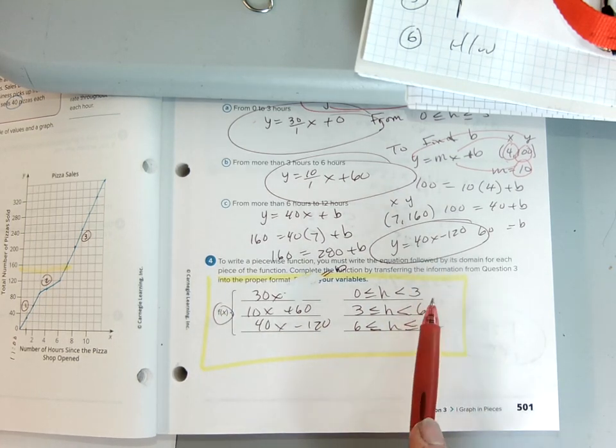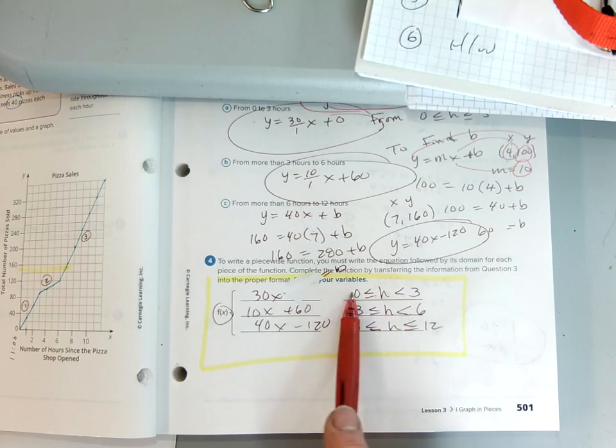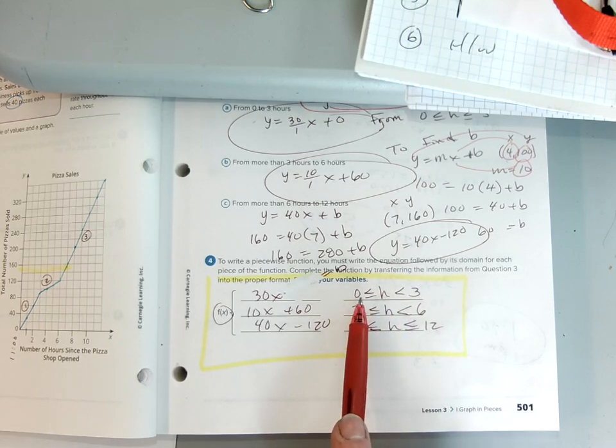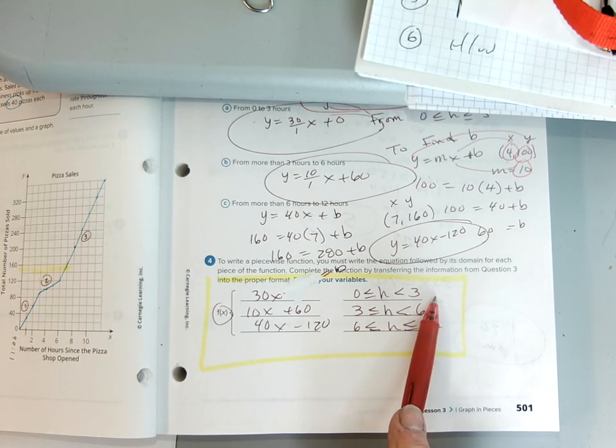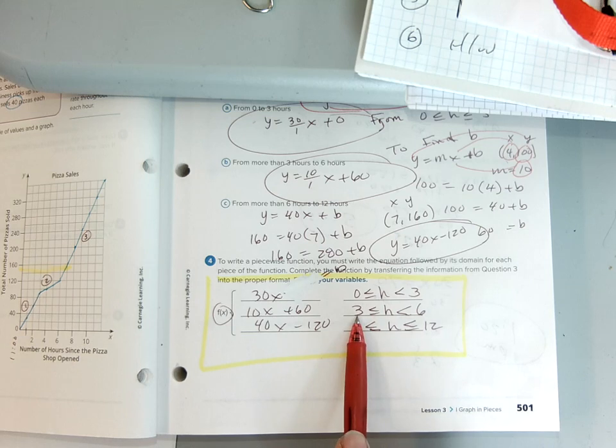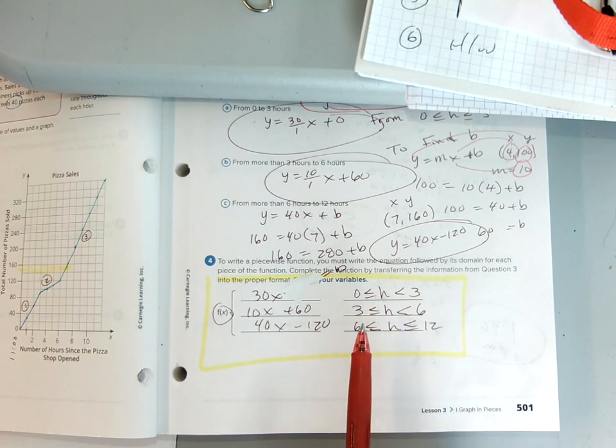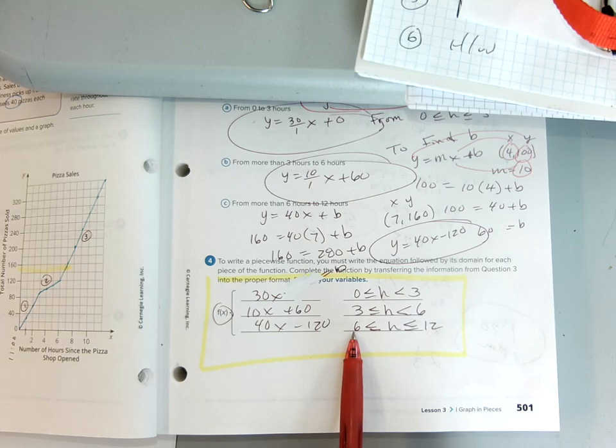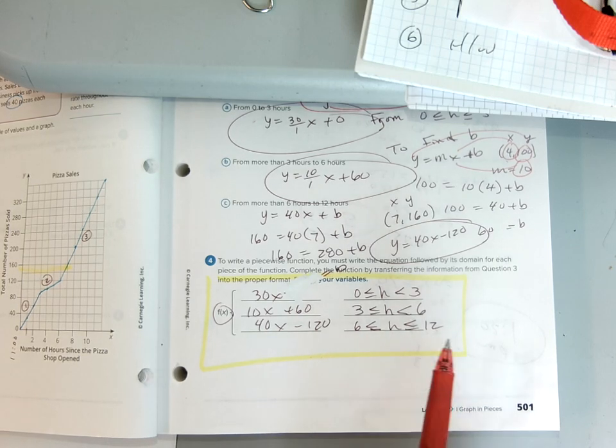Now, we have to say that this first graph, which is the lunch crowd, goes from 0 to 3 hours. The second graph, which is the afternoon crowd, goes from 3 to 6 hours. And finally, the evening crowd or dinner crowd goes from 6 to 12 hours.